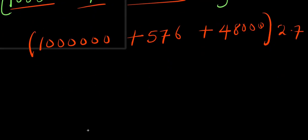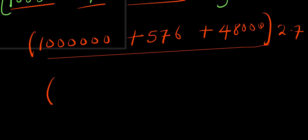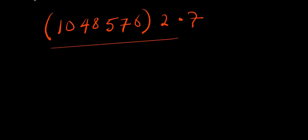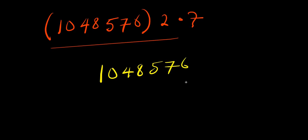Adding these together: 576 plus 48,000 plus 1,000,000 gives 1,048,576. So we have 1,048,576 times 2 times 7. Let's multiply this out: first 1,048,576 times 2.